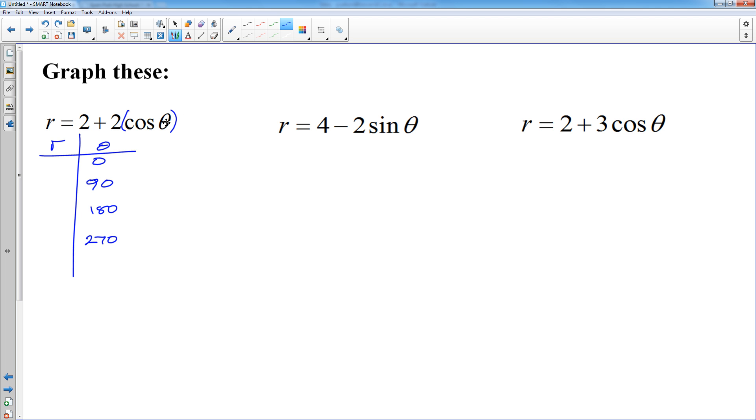So here I'm plugging into cosine. Cosine of zero is one. Two plus two times one is four. Cosine of 90 is zero. So two plus two times zero is two. Cosine of 180 is negative one. So two times negative one is negative two. Plus two is zero. And cosine of 270 again is zero. So two times zero plus two is two. And then what I have there is four points that I can quickly graph. And I will look at the orientation of those four points.